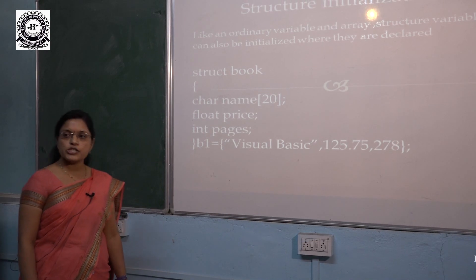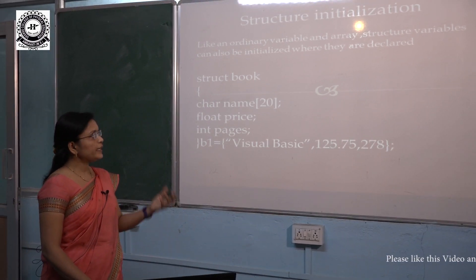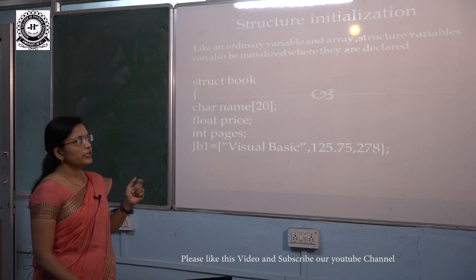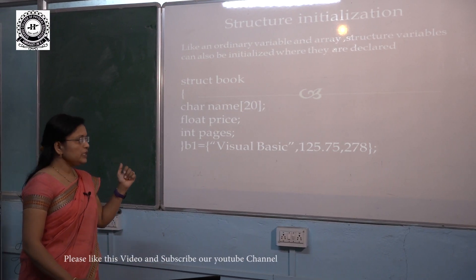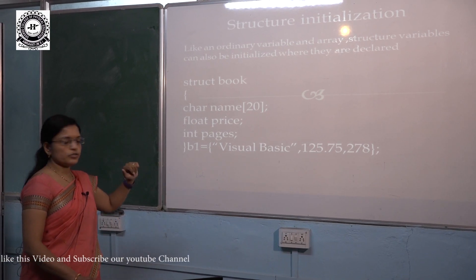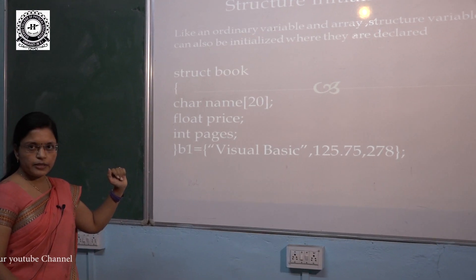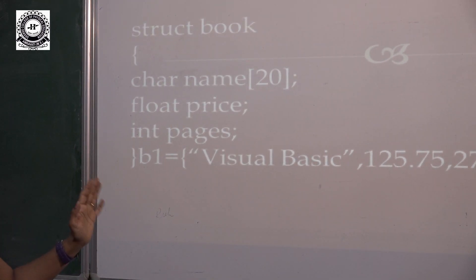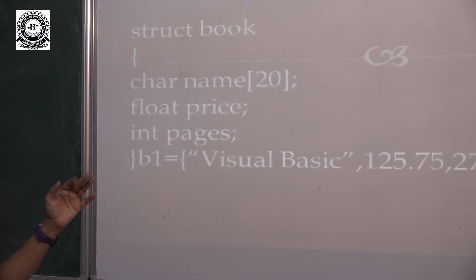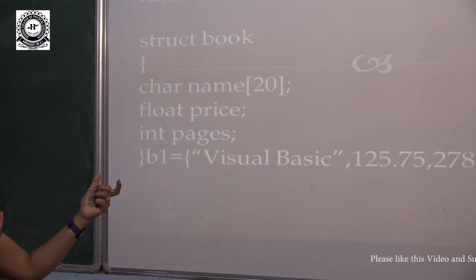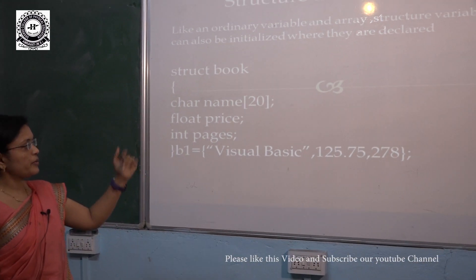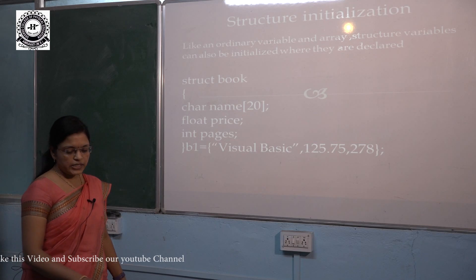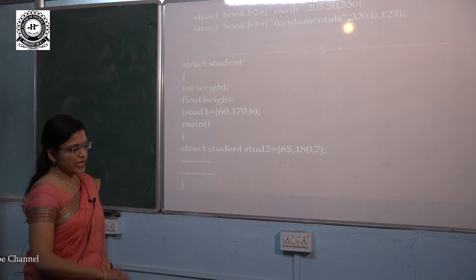Now we will see how we can initialize structure variables. Like an ordinary variable and array, structure variables can also be initialized where they are declared — that is, within the structure definition after the closing brace, we write the structure variable name. Then using the assignment operator, we can initialize values for the particular members inside that structure. In this example, we have given the string value 'Visual Basic' in double quotes, then for price we put 125.75, and for pages we have given the value 278.